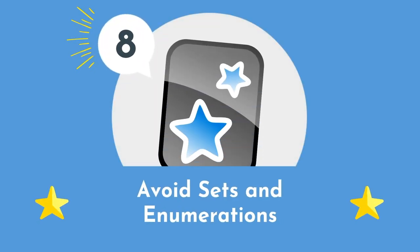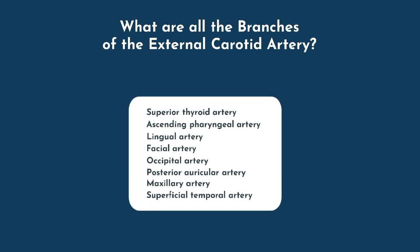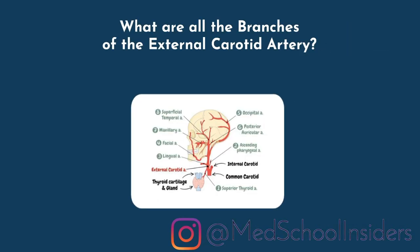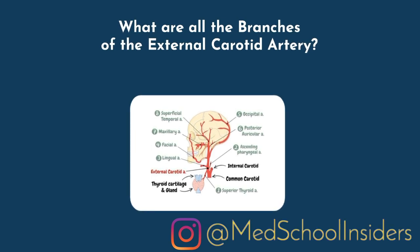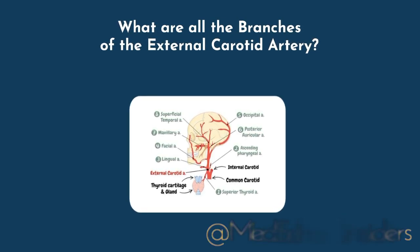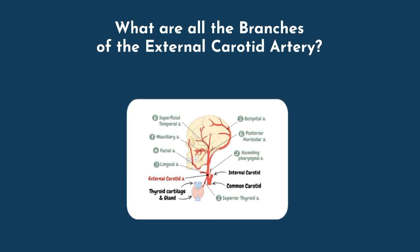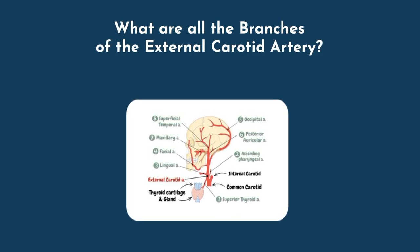Number 8: avoid sets and enumerations. Sets are collections of objects — for example, what are all the branches of the external carotid artery? Just listing them out without any direction is actually quite challenging. So instead, we convert this to an ordered list, which is called an enumeration. By reciting the branches in order from proximal to distal, you're much more likely to remember the information.